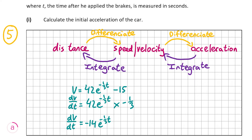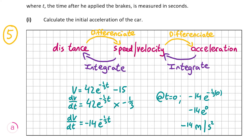Remember, it's the initial acceleration we're looking for, so that's at time t = 0. We pop in 0 for t: −14e^(−(1/3)×0) = −14e^0 = −14 × 1 = −14. And that's our answer for Question A, Part 1.